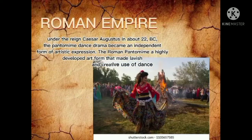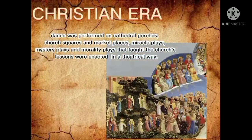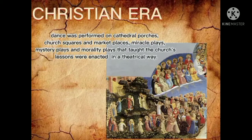Next is the Roman Empire. Under the reign of Caesar Augustus around 22 BC, the pantomime dance drama became an independent form of artistic expression. The Roman pantomime was a highly developed art form that made lavish and creative use of dance. And lastly, the Christian era: dance was performed on cathedral porticos, church squares, and marketplaces. Miracle plays, mystery plays, and morality plays that taught the church's lessons were enacted in a theatrical way.